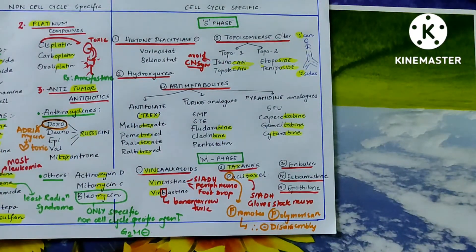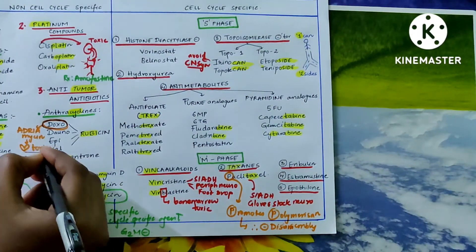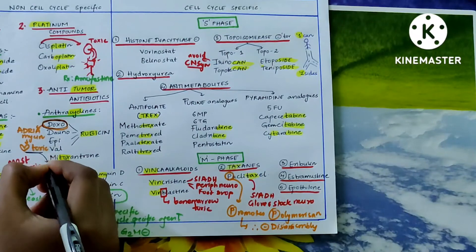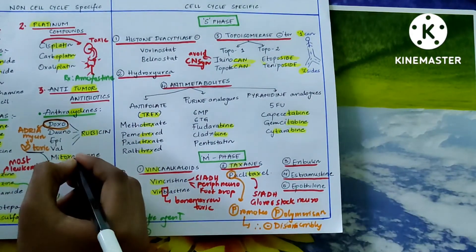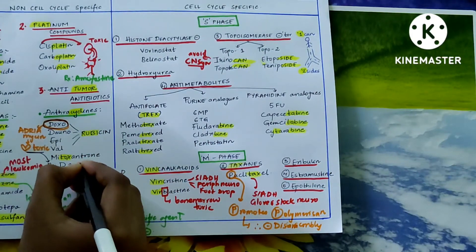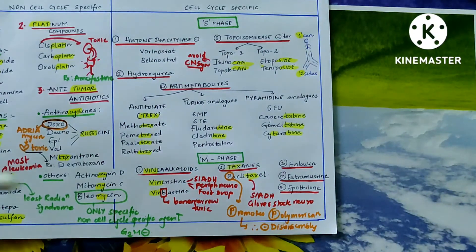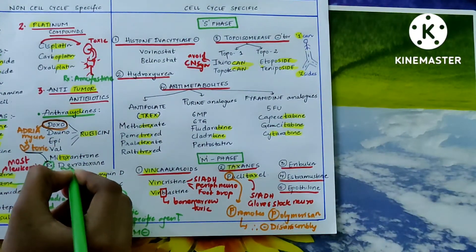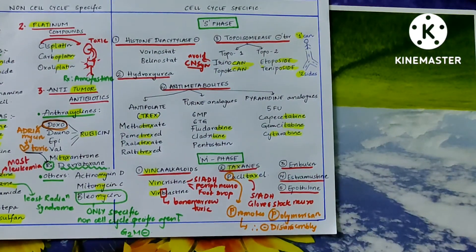Lastly, the cardiotoxicity caused by doxorubicin (adriamycin) is treated with dexrazoxane. Amifostine is used for nephrotoxicity and neurotoxicity caused by cisplatin. Remember these two antidote treatments.